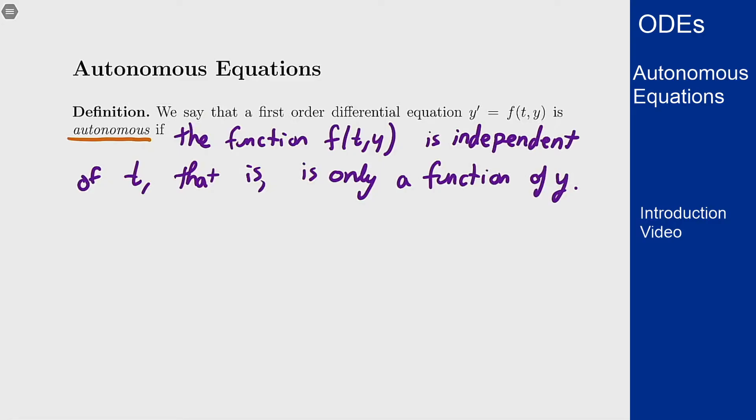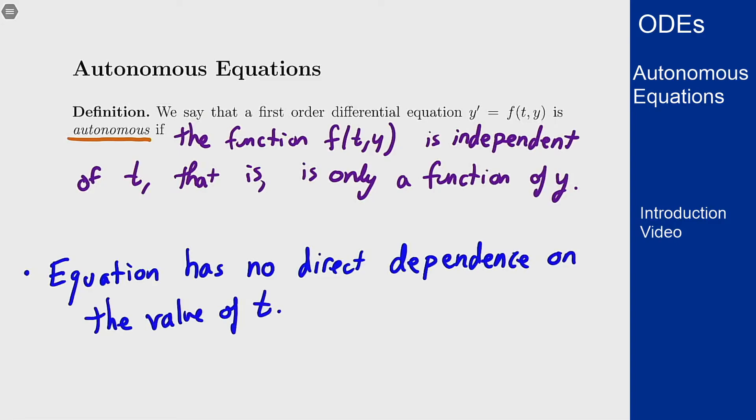only depends on y and has no direct dependence on t. So if this is the case what we really see is that the differential equation itself has no direct dependence on the actual value of t. It only really depends on the value of the function itself and a lot of physical models actually have this property.